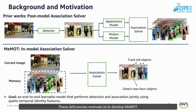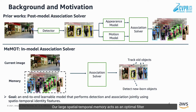These deficiencies motivate us to develop MAMOT. We propose to leverage a large spatial-temporal memory to achieve robust object association across time for the MOT task. Our large spatial-temporal memory acts as an optimal filter that internally summarizes history information to infer a new frame tracking result.